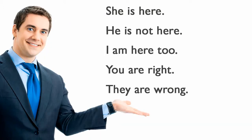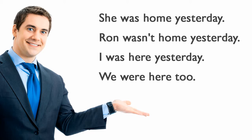The S form of the verb be — examples: She is here. He is not here. I am here, too. You are right. They are wrong. She was home yesterday. Ron wasn't home yesterday. I was here yesterday. We were here too.